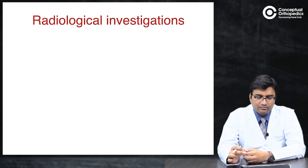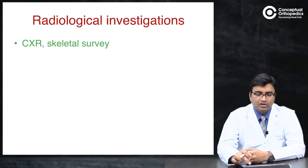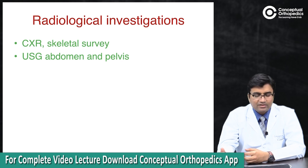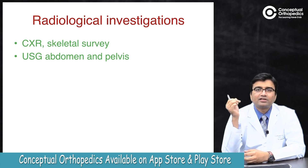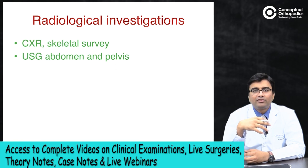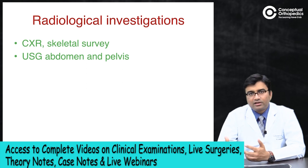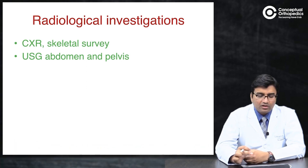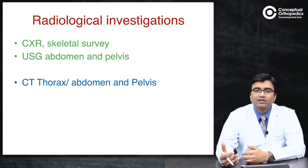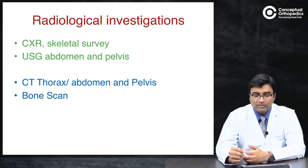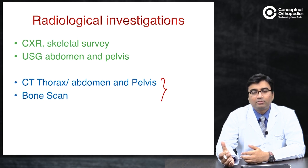For radiological investigations, before CT scans we used skeletal survey — including AP/lateral skull views, chest X-ray, pelvis, spine, humerus, and femur. Currently, guidelines recommend CT thorax, abdomen, and pelvis combined with a bone scan. This staging workup helps identify the primary site in more than 85 to 90 percent of cases.